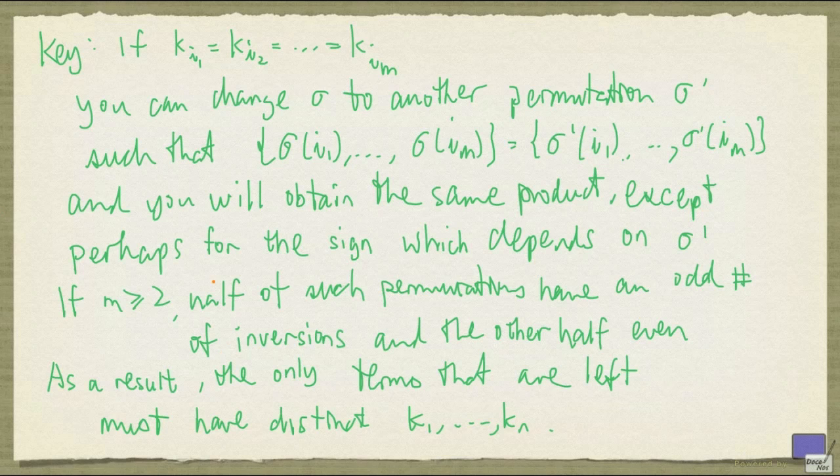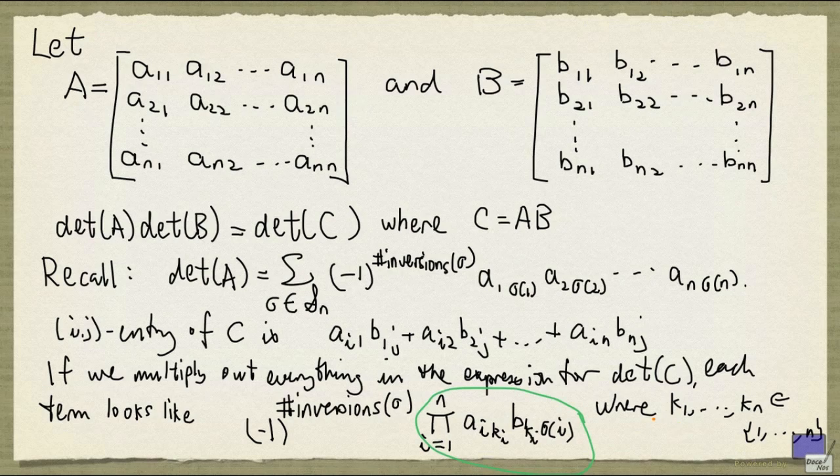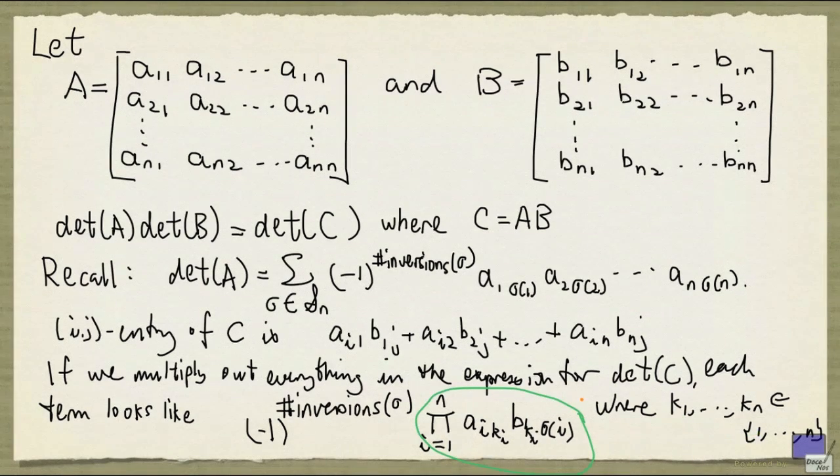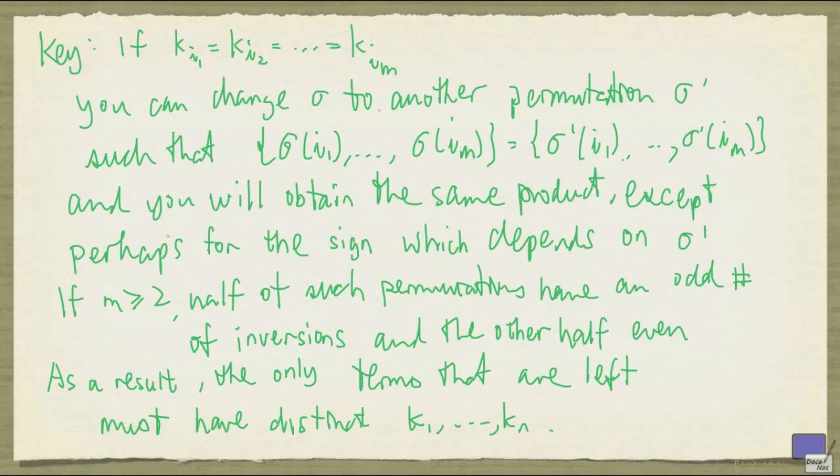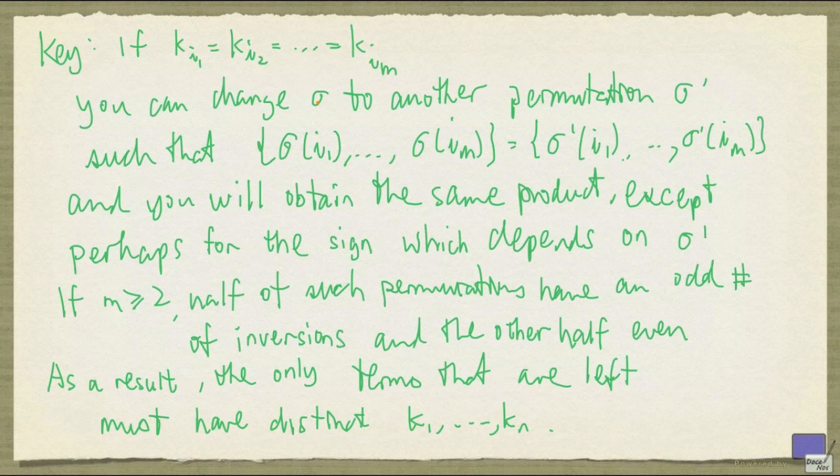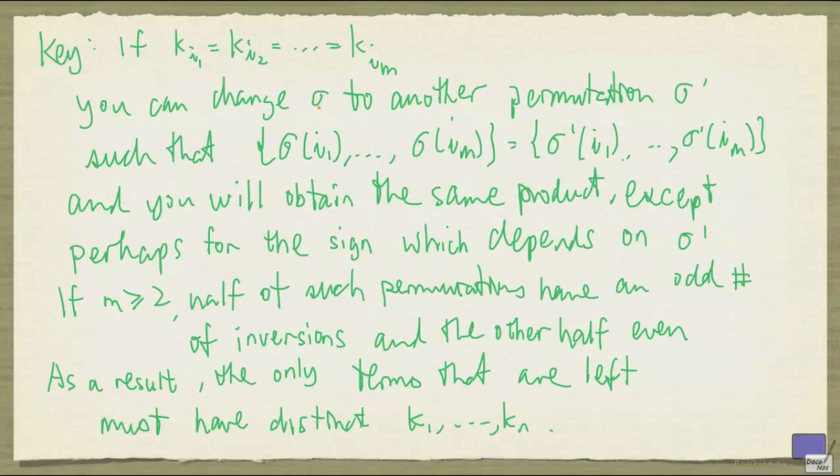So the key observation is the following. If some of these indices k1 up to kn are the same, then you can actually get the same product in different ways. And here is the statement that makes it more precise. Suppose you are looking at a product that comes from a term determined by this sigma.